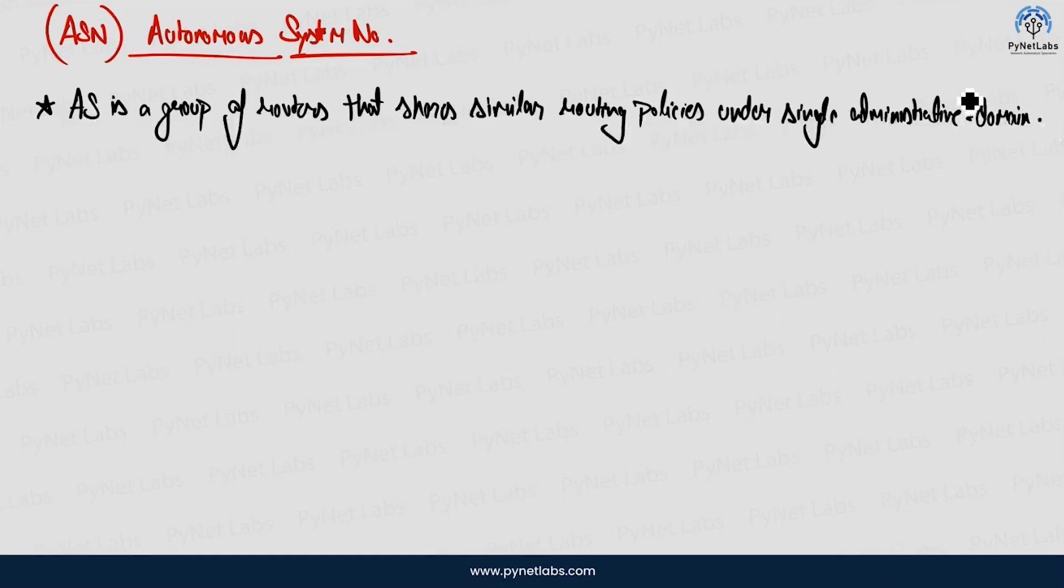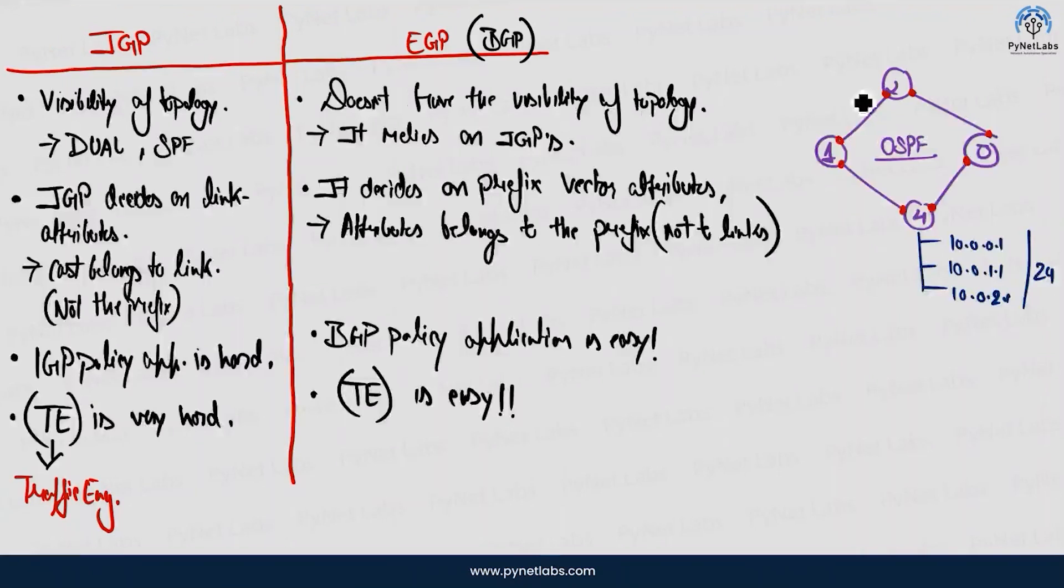So what I mean by this point is, suppose that if we discussed a scenario over here, four routers were there and all these routers are configured with OSPF. In that case, this is a group of routers which is actually sharing similar routing policies with each other and they are operating within a single administrative domain. So if we are depending upon the BGP protocol and if we are defining BGP for these four routers.